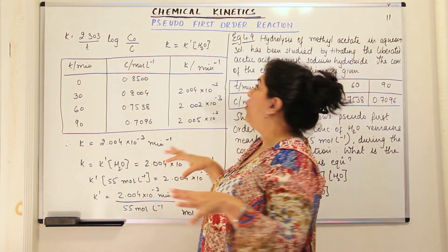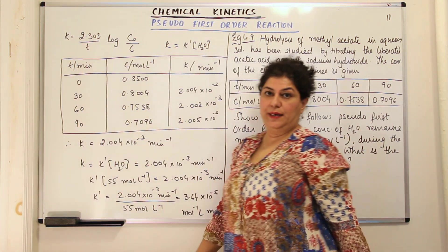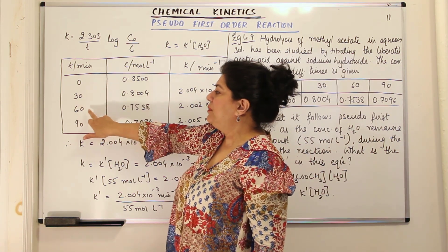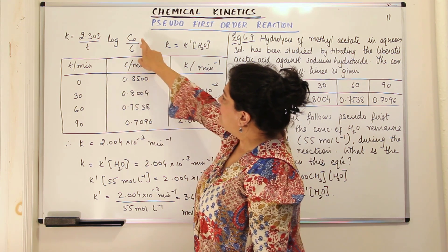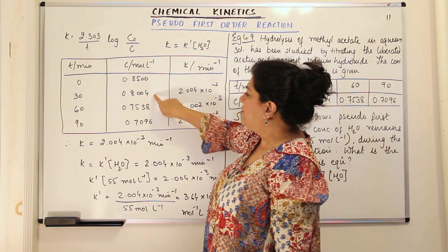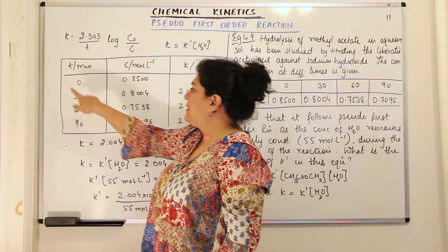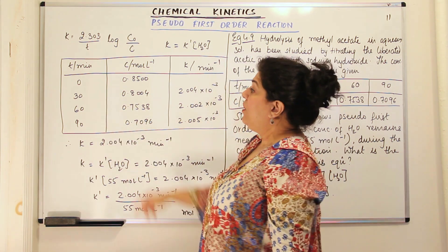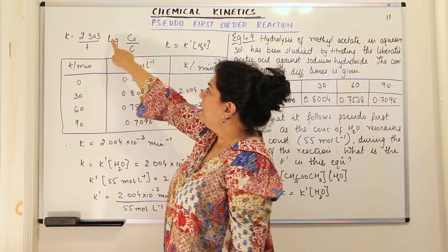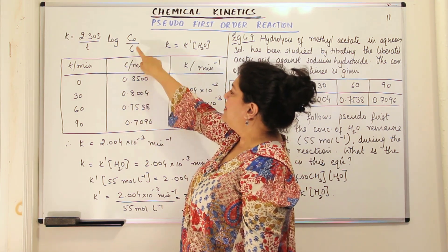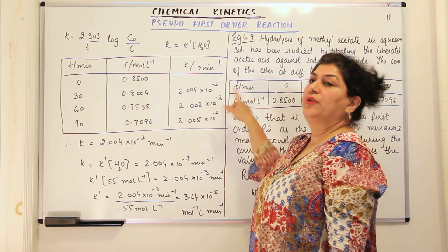The concentration C₀ is 0.8500, and there are readings at 30, 60, and 90 minutes. For t = 30 minutes, we write K = (2.303 / 30) × log(0.8500 / 0.8004). When you solve this, the value of K is equal to 2.004 × 10⁻³ per minute.